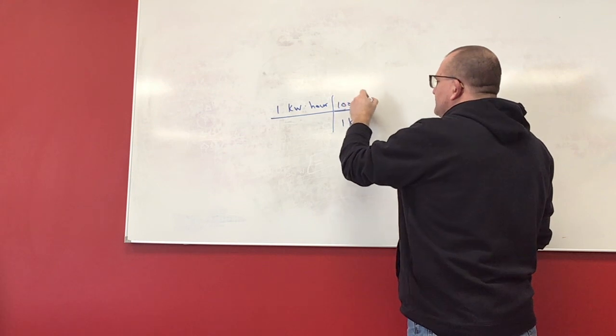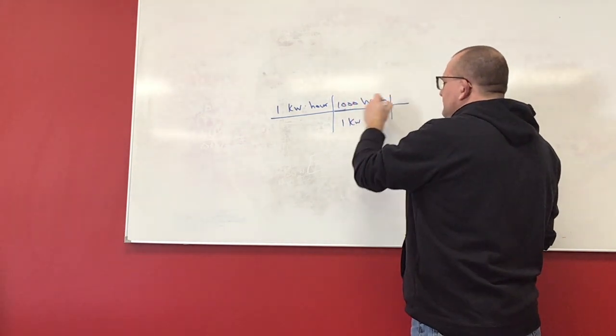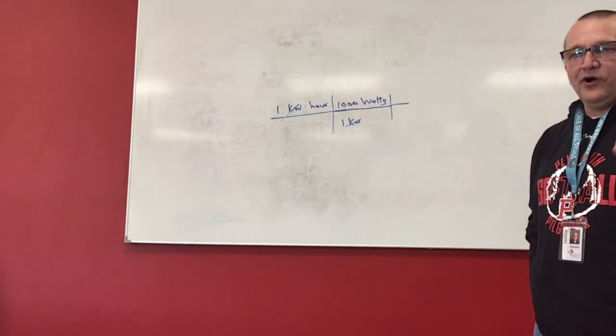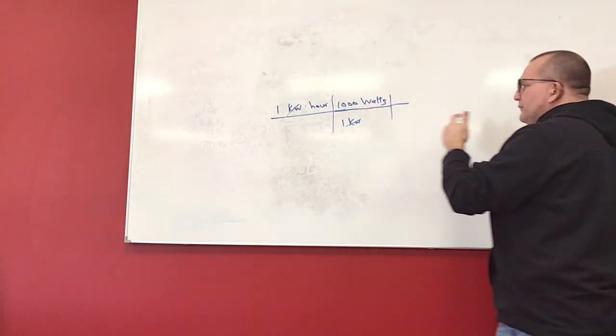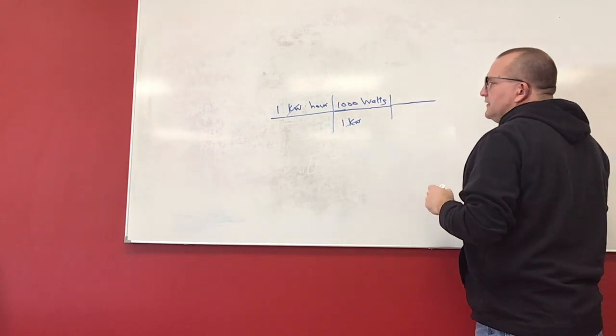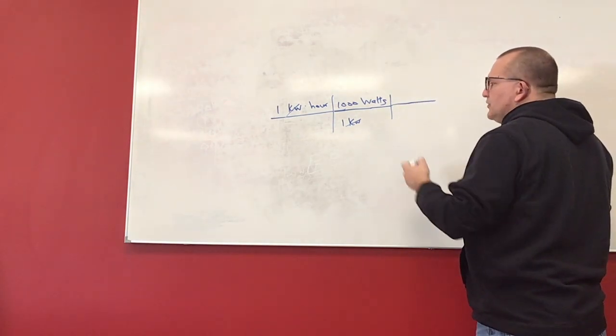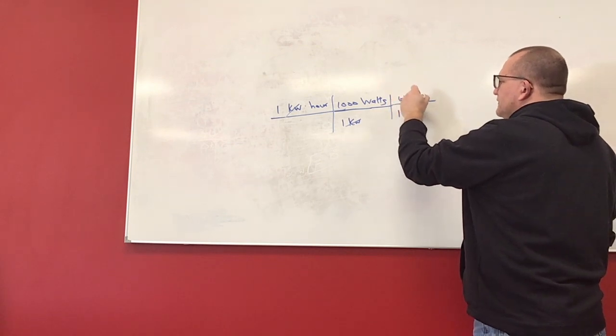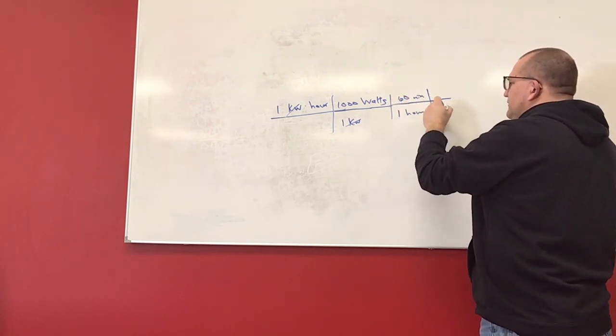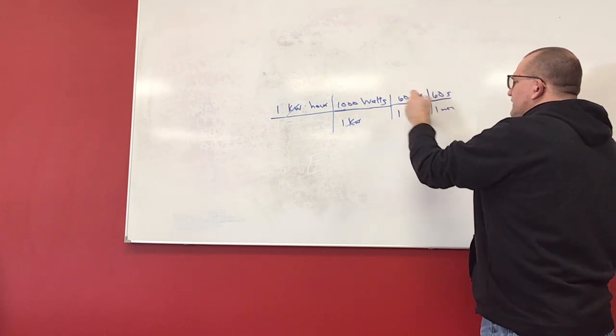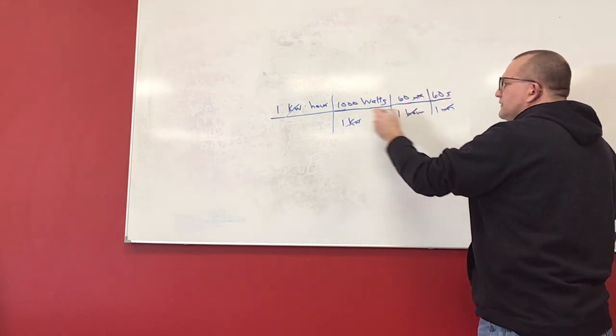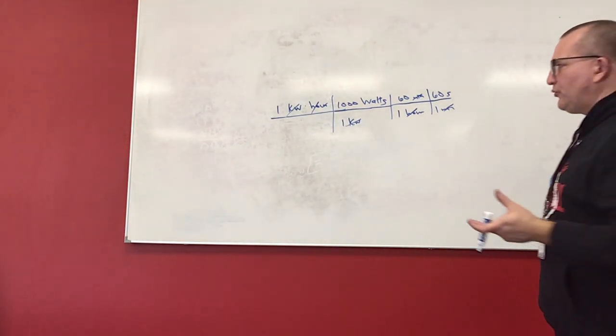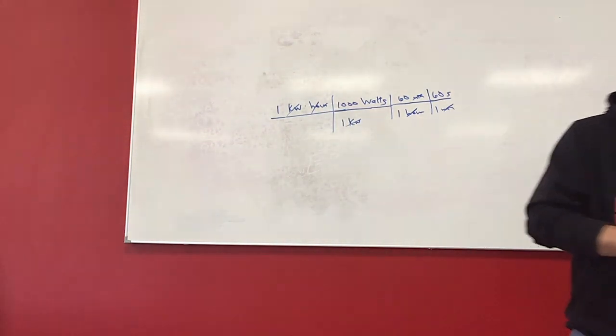And then we want to go from hours to seconds. So one hour is 60 minutes, and one minute is 60 seconds. Alright, and this will give us seconds. Now why is that important? Well, let's get our answer and then we'll talk about that.